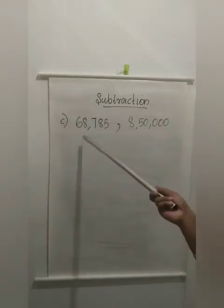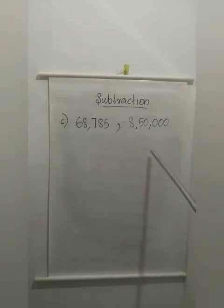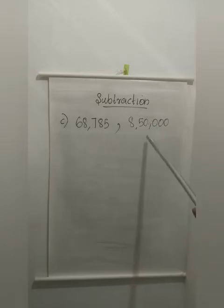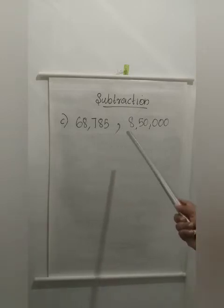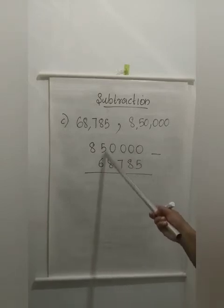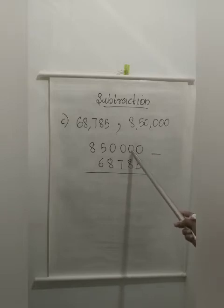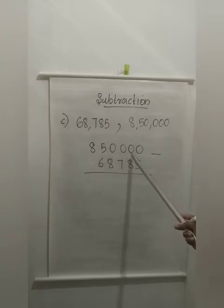Next example: 8,50,000 minus 68,785. Now by seeing itself you can see which number is greater. Here you have only 5 digits, here you have 6 digits. So the 6-digit number is the larger number. First we have to write 8,50,000, then 68,785. Here, see the case — the first four digits of the larger number are coming as 0. So when you are subtracting 5 from 0, you cannot subtract. We have to borrow. But when looking for borrowing, here it is 0 — can we borrow anything from 0? No.